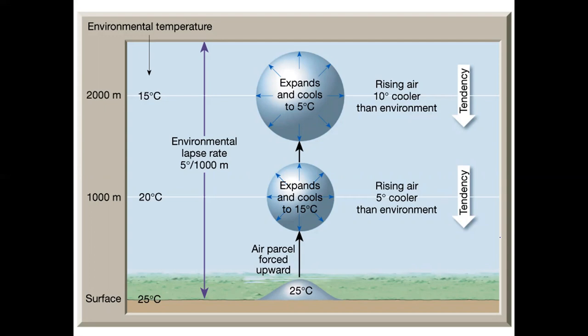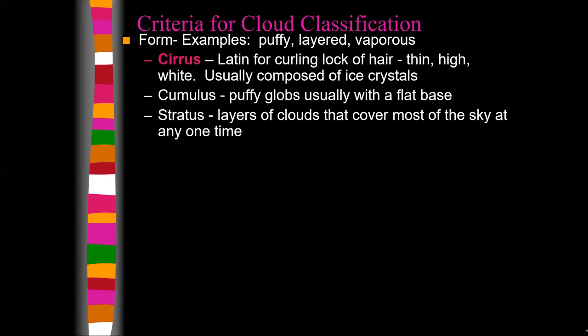This illustrates the air rising and falling and what happens with the moist and dry adiabatic rates. Now we're getting into clouds, so we have to figure out how to classify them. For the longest time people thought clouds were so variable that there was no way to classify them, but we're humans — we want things classified because it's easier to understand when we can put things in different piles.